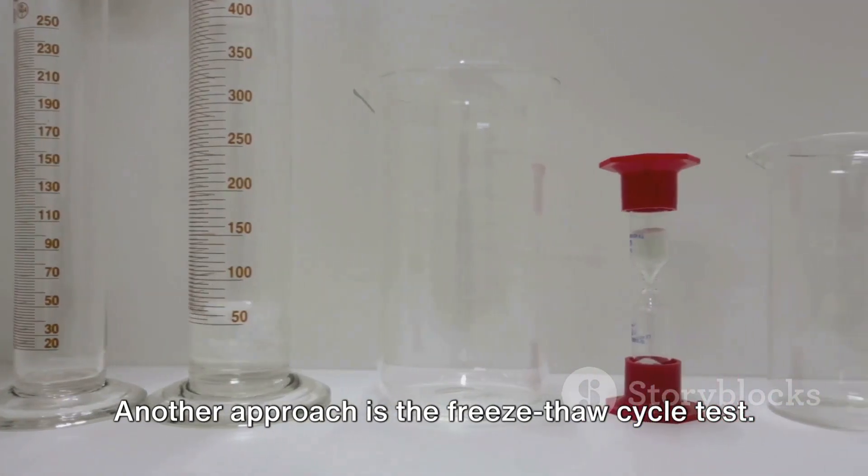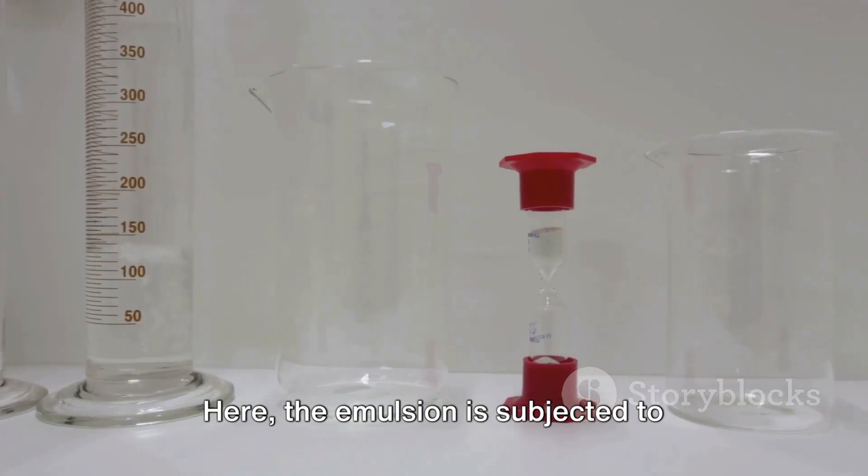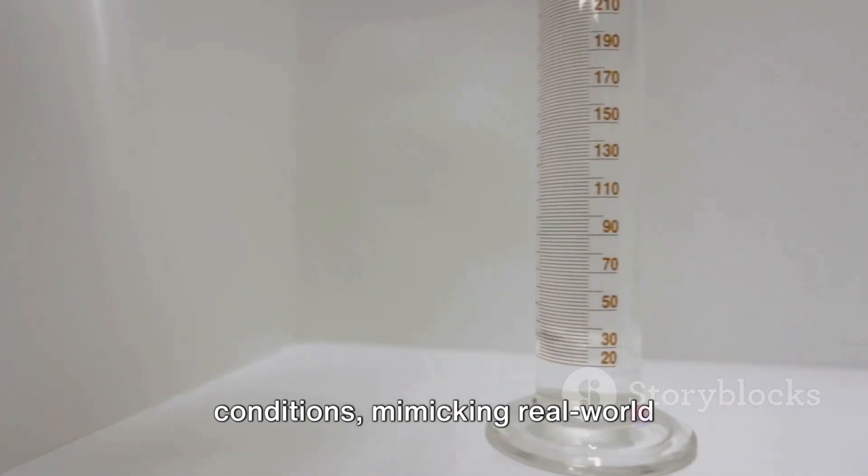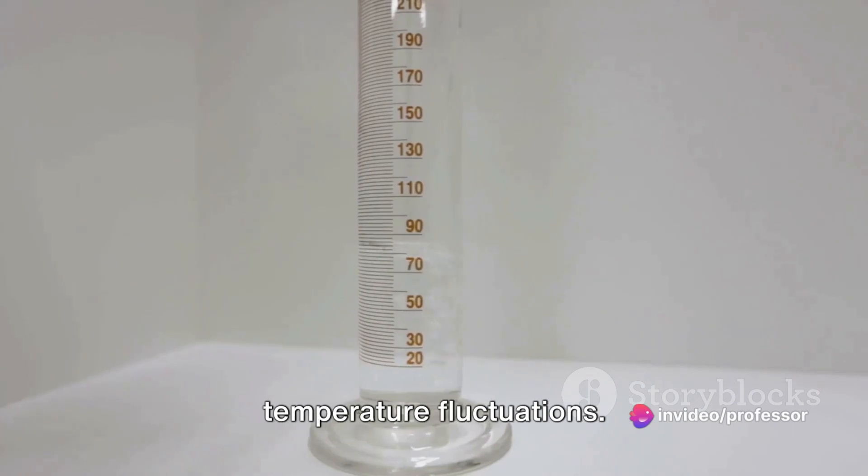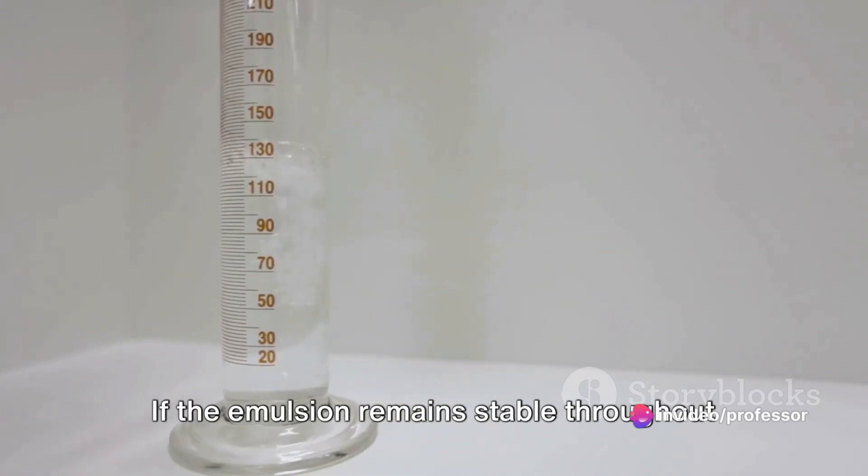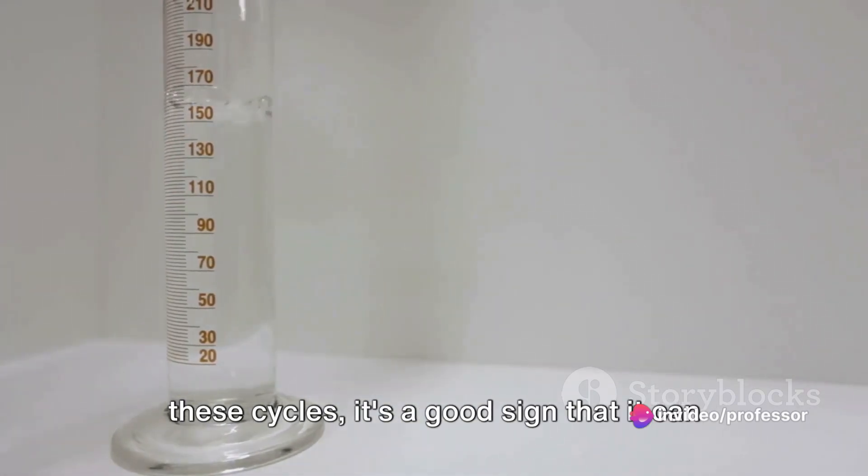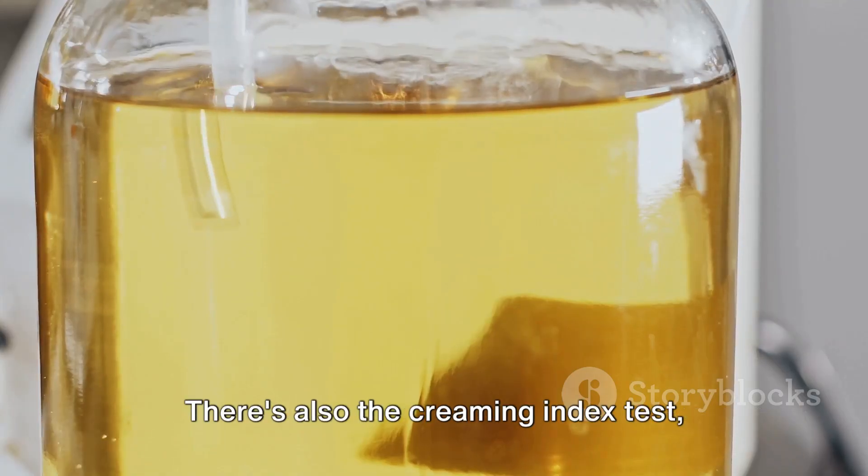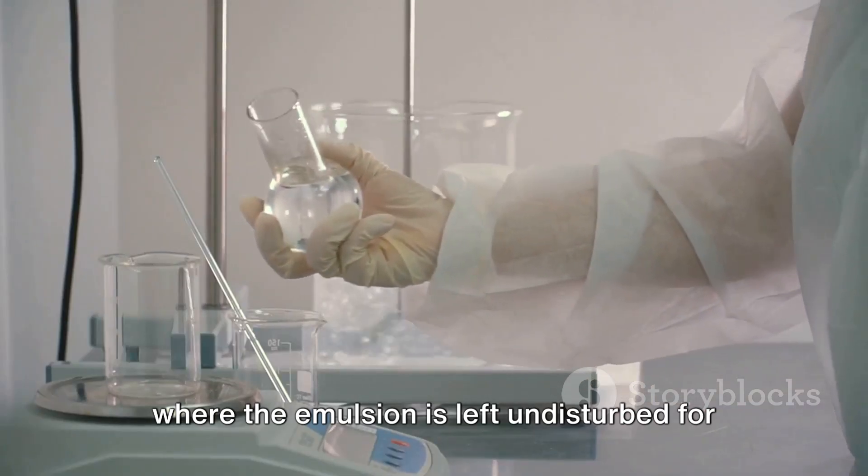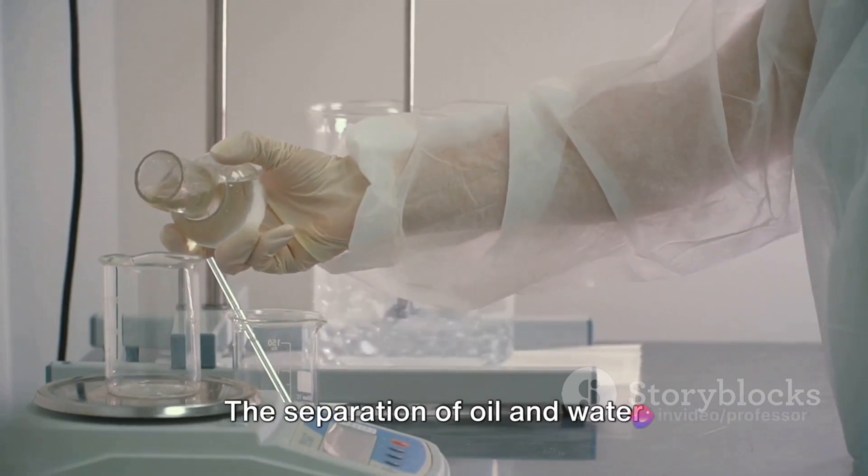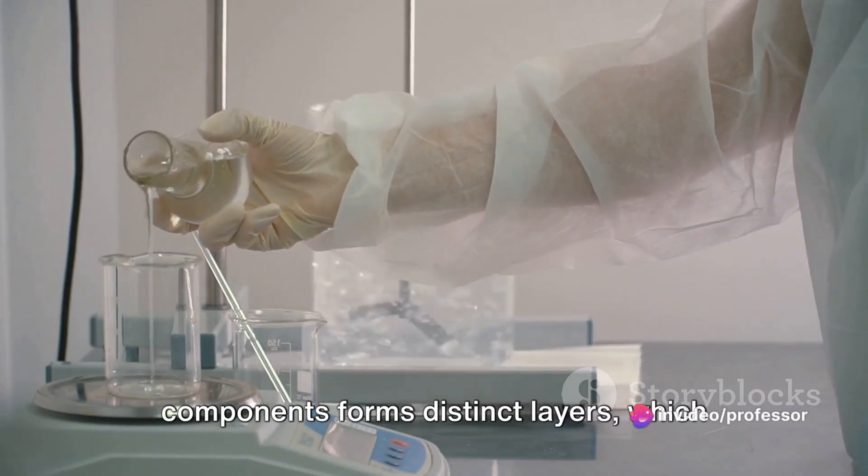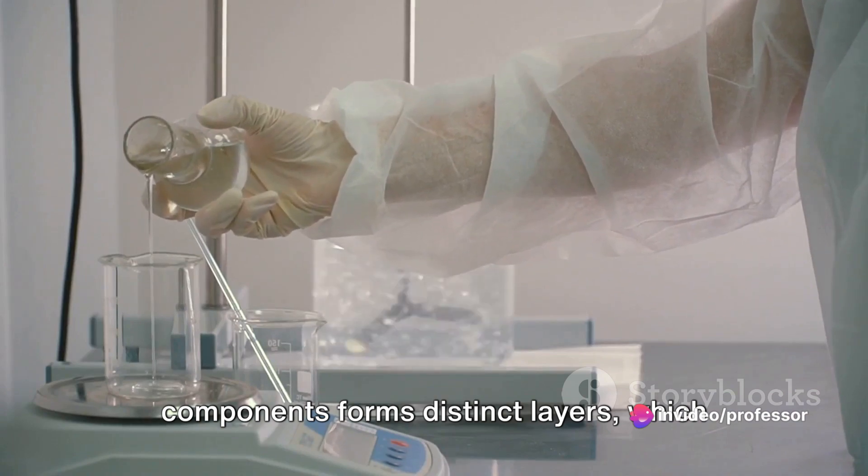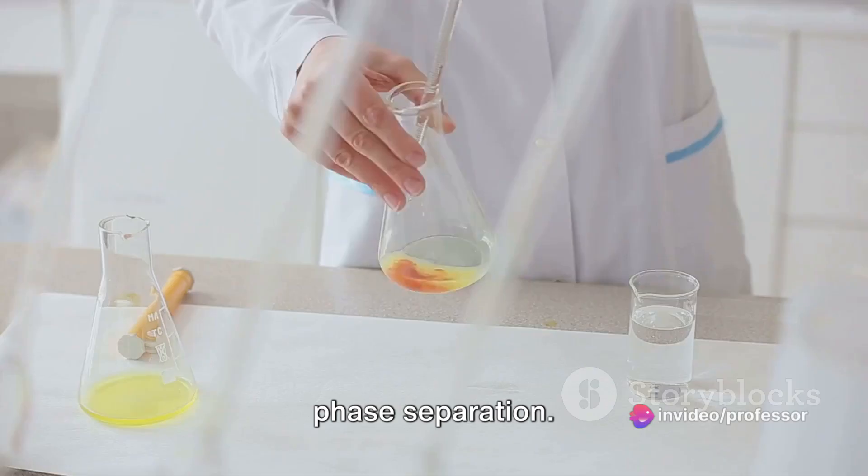Another approach is the freeze-thaw cycle test. Here, the emulsion is subjected to alternating freezing and thawing conditions, mimicking real-world temperature fluctuations. If the emulsion remains stable throughout these cycles, it's a good sign that it can withstand varied conditions. There's also the creaming index test, where the emulsion is left undisturbed for a certain period. The separation of oil and water components forms distinct layers, which can be measured to determine the extent of phase separation.